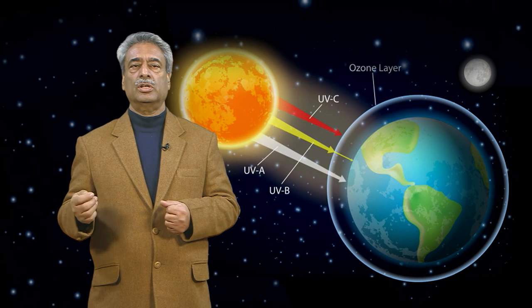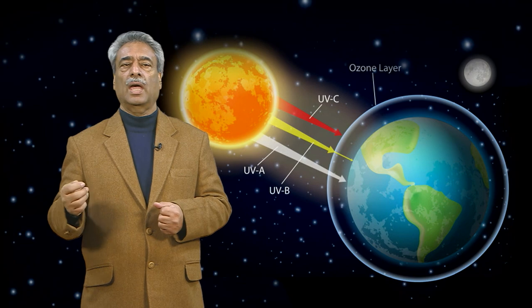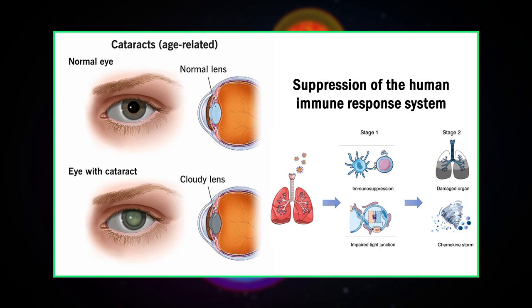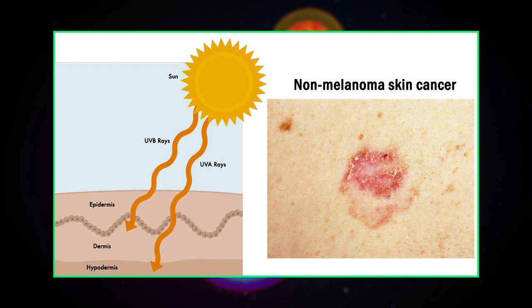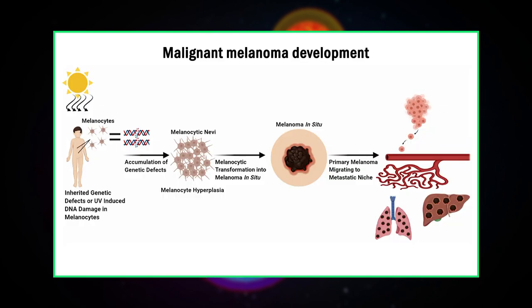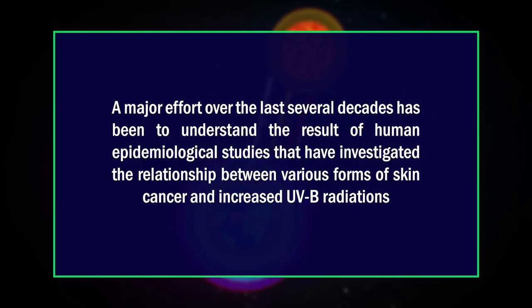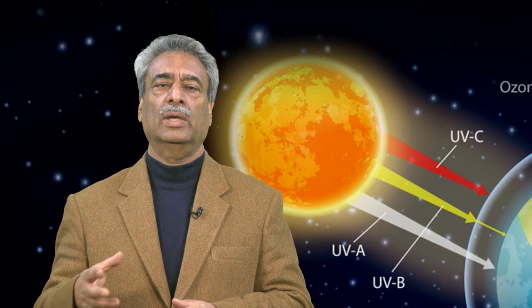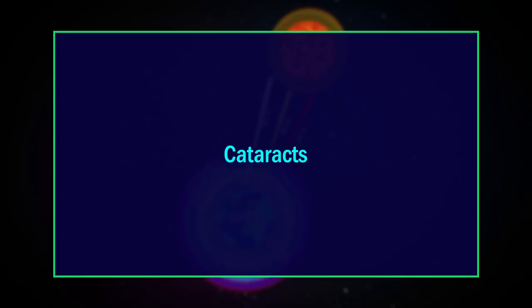Now let's look at the impact of ozone depletion on humans. UVB radiation is sufficiently energetic to break apart important biological molecules including proteins and DNA, resulting in increased skin cancers, cataracts, and suppression of the human immune response system. UVB radiation causes non-melanoma skin cancers and plays a major role in malignant melanoma development. Non-melanoma skin cancers mainly include basal cell carcinoma and squamous cell carcinoma. A one percent decrease in stratospheric ozone is estimated to cause an increase of approximately 2.3 percent in non-melanoma skin cancers.